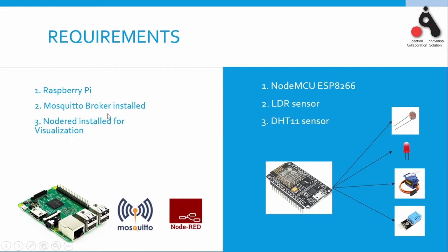The requirements of this project are: a Raspberry Pi, Mosquitto MQTT broker, and Node-RED — these two softwares need to be installed on Raspberry Pi. It is not compulsory to use Raspberry Pi; you can also use your own computer for the same purpose. For the sensor part you need an ESP8266 or any other Wi-Fi module, and the sensors I am using are an LDR resistor, a DHT11 temperature and humidity sensor, and a servo motor.